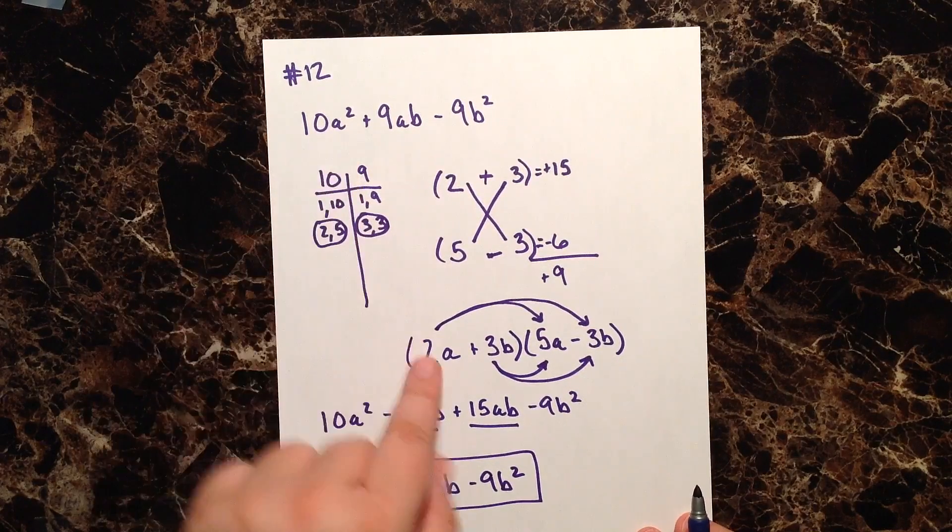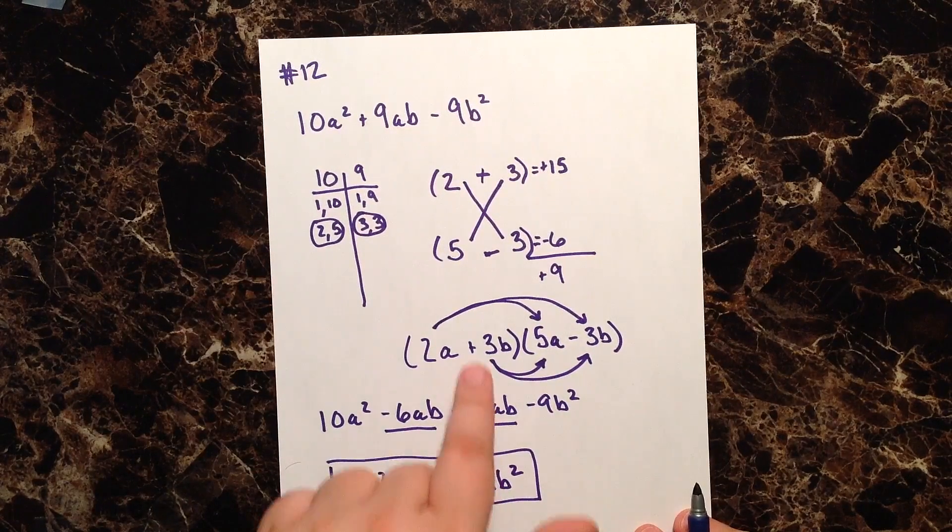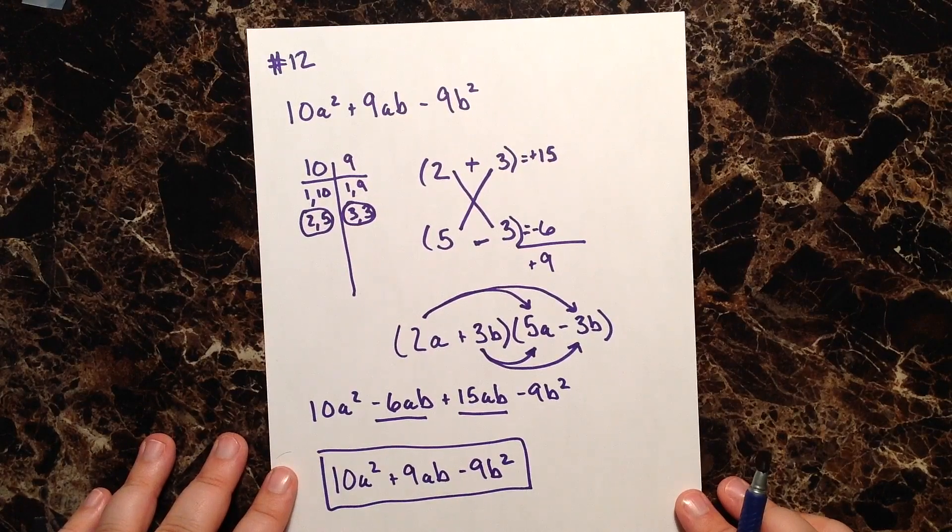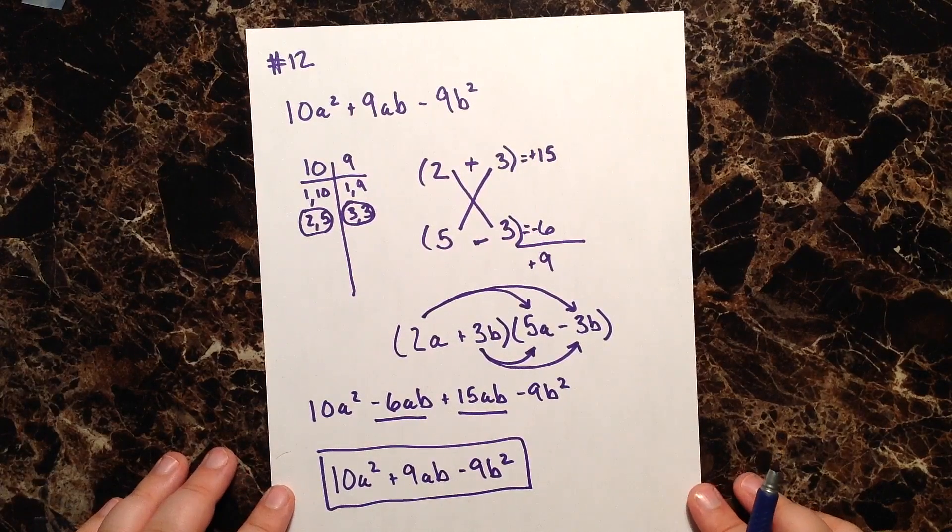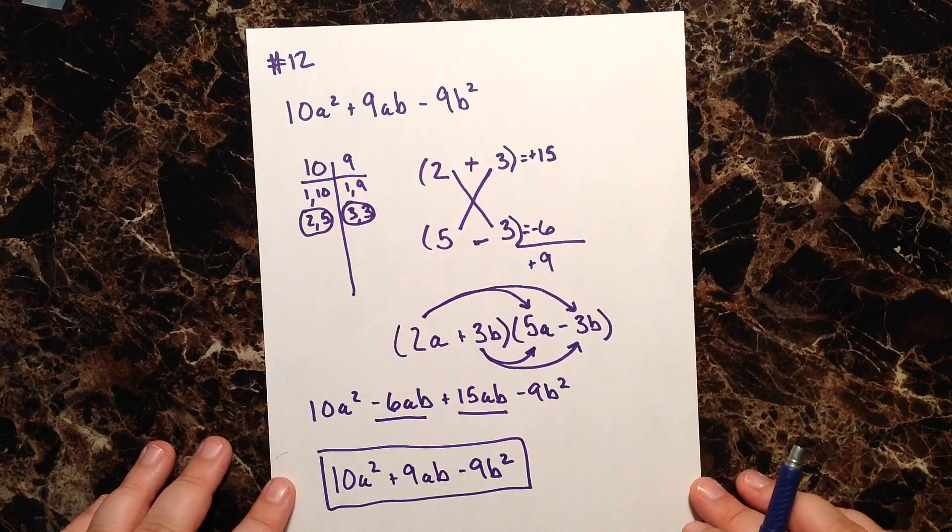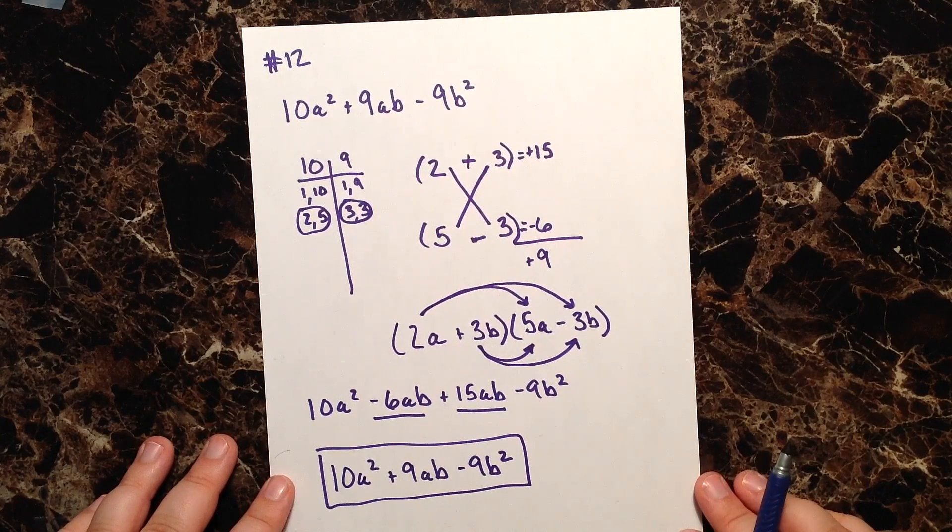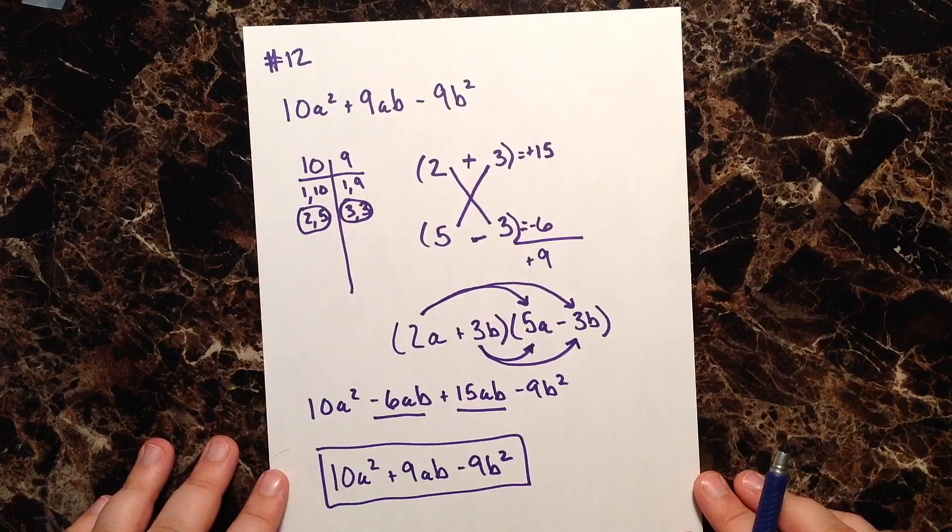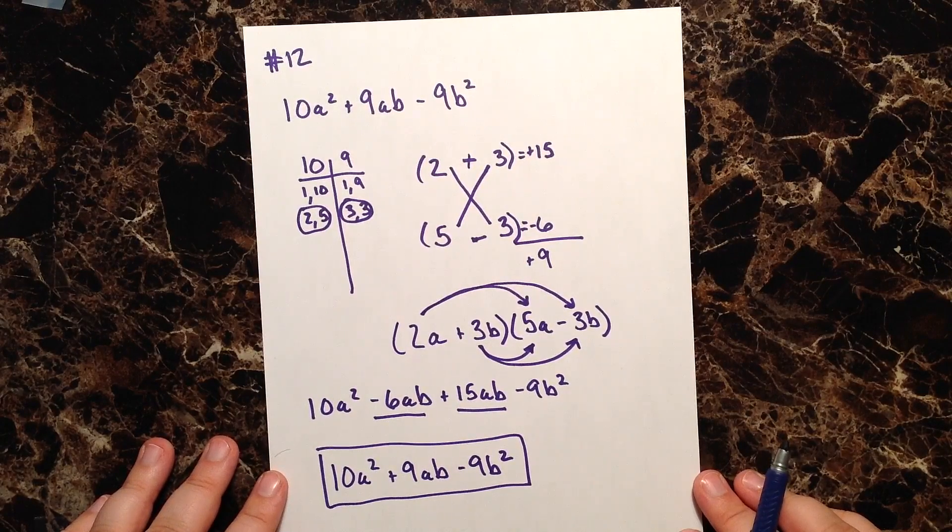And since it foiled out to be that, we know that our factors are correct. And so that's a quick way that you can check yourself on a test just to make sure that your factors are correct. This was question number 12. We're going to move on to lucky number 13 next. Again, this is Joe Brownlee with Palm Beach State. Thanks for watching.